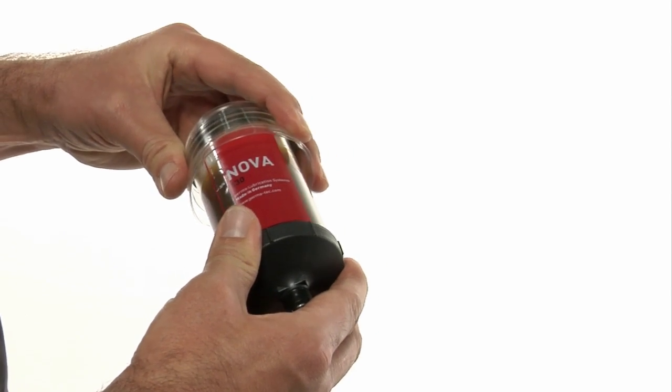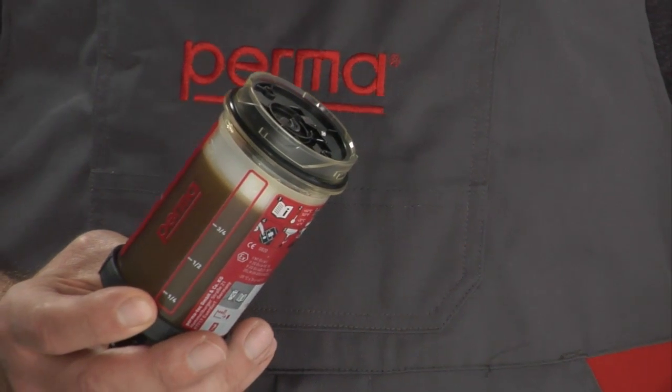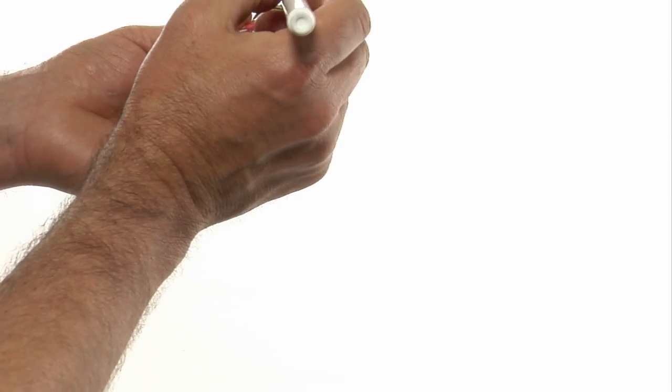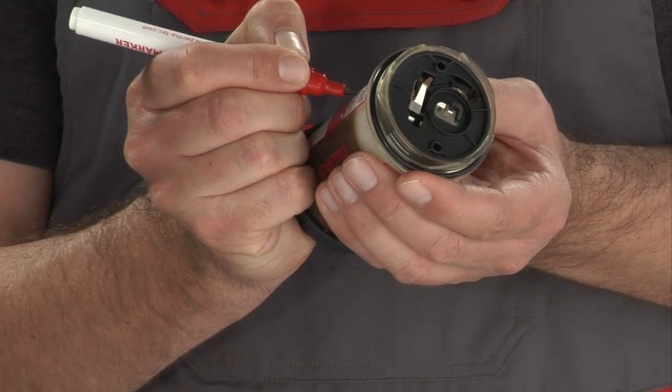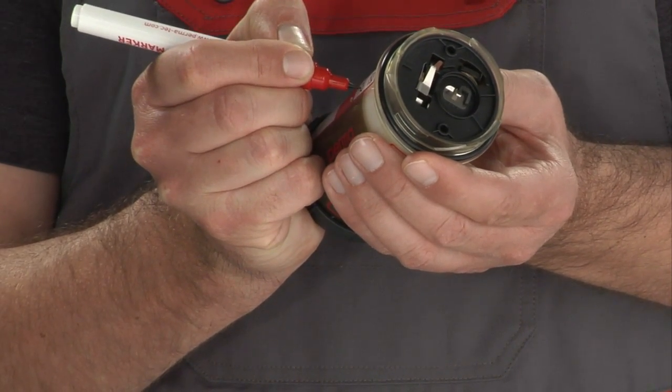Remove the plastic cover from the new LC unit. Use a waterproof pen to write the activation and expected replacement date on the new lubrication system.